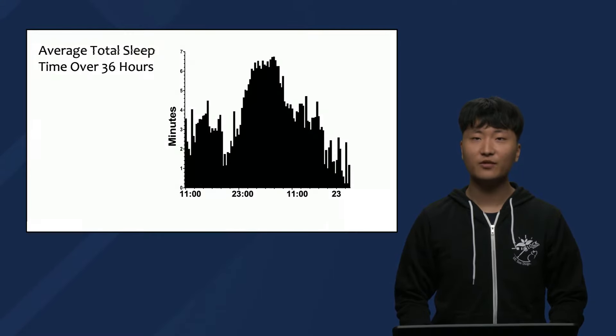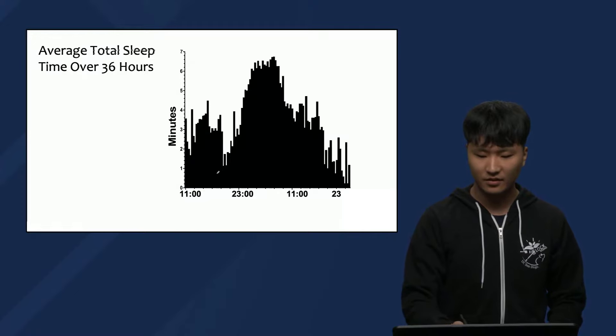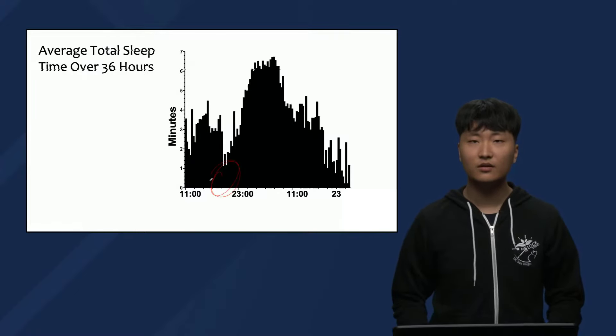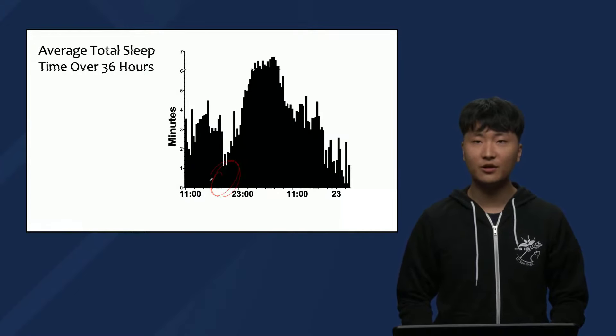To sum up, let's go back to the simplified figure with the data from everyone in the study. Now that we understand the concepts of the forbidden zone and the sleep gate, we can understand this figure better. On this graph, we can see that around 1900, the participants on average are in their forbidden zone, as they're sleeping the least here.